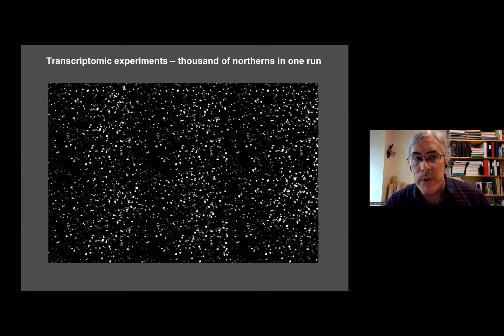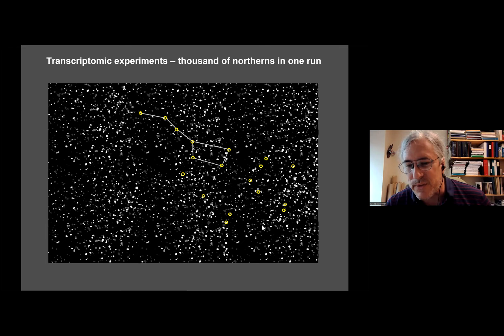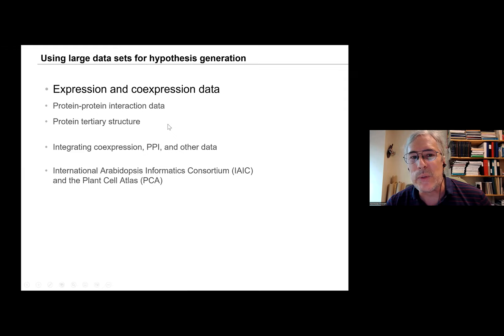Now, fast forward a couple of decades, and you can do thousands of northerns in one run. Here's the output of a flow cell, and I've just highlighted the handful of genes that we were looking at in response to drought. We were coming up with hypotheses based on very limited data. Now, of course, the idea is we can use this whole universe of data to actually generate hypotheses. That was a bit of a long-winded introduction, but what I'm going to tell you today is about using large data sets for hypothesis generation.